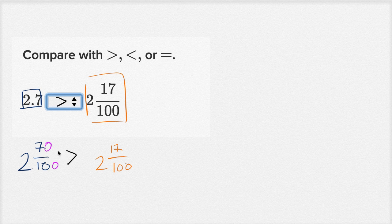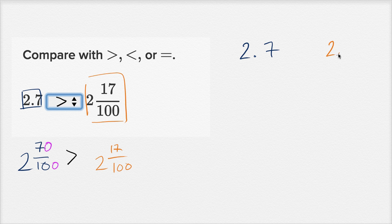We open the symbol to the larger number. Another way we could have thought about this is to convert them both to decimals. So we have 2.7, which we could leave as a decimal. Then 2 and 17 hundredths we could write as 2.17 — this is 17 hundredths.